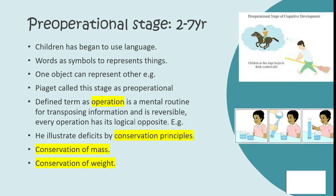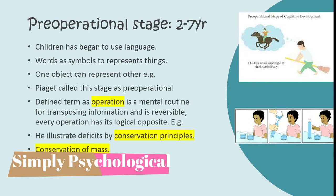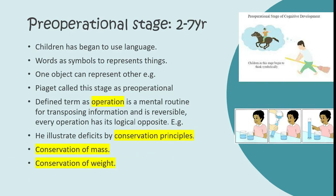For example, if you take two equal clay balls, show the child they are equal, then roll one into a sausage shape while the other remains the same — and the child sees that no clay was added or removed — and then ask the child which one has more clay, the child will say the longer one contains more clay. Until around age seven, the majority of children develop conservation and begin to perceive them as equal regardless of shape.